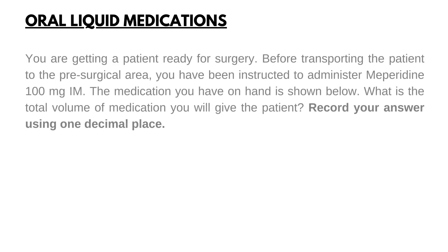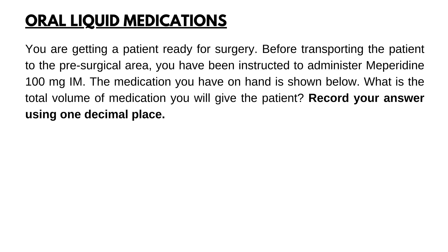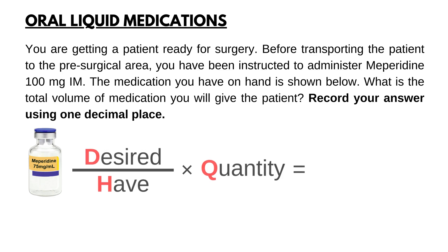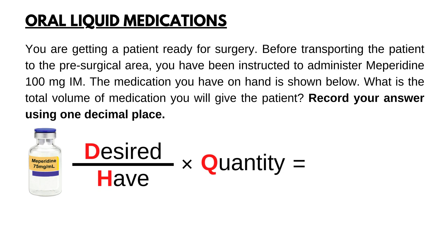You are getting a patient ready for surgery. Before transporting the patient to the pre-surgical area, you have been instructed to administer meperidine 100 mg IM. The medication you have on hand is shown below. What is the total volume of medication you will give the patient? Record your answer using one decimal place. First, set up the formula desired over have times quantity. Add the unit answer milliliters because the question is asking about total volume.